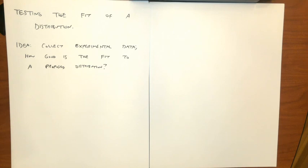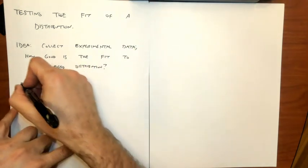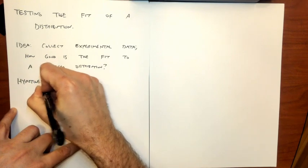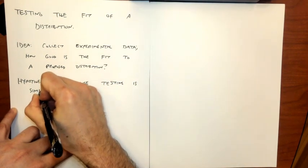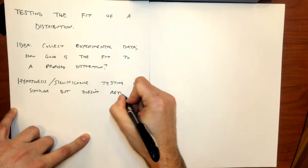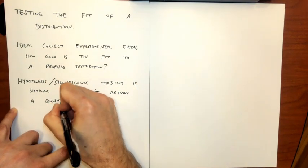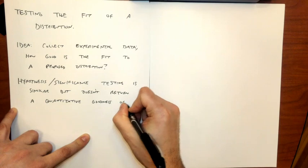Hypothesis testing gives us a binary yes or no answer. If I say here is my significance level, I want to know am I able to reject the null hypothesis or not? I get this binary yes or no answer, but it doesn't quite quantify in a numerical sense how good the fit is. That's what I want to talk about today. What I want is a number that says how good was the fit.